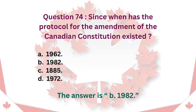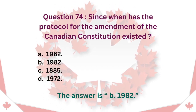Question 74: Since when has the protocol for the amendment of the Canadian Constitution existed? A. 1962. B. 1982. C. 1885. D. 1972. The answer is B. 1982.